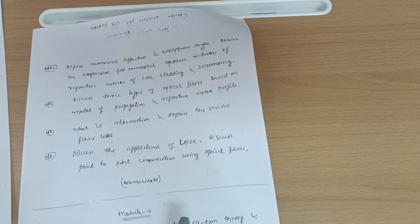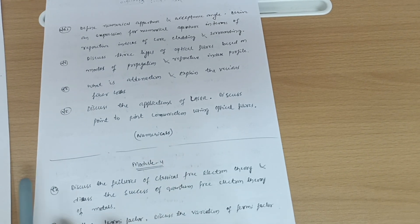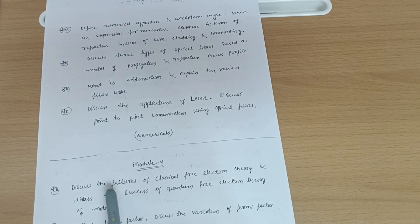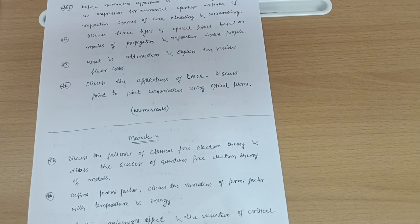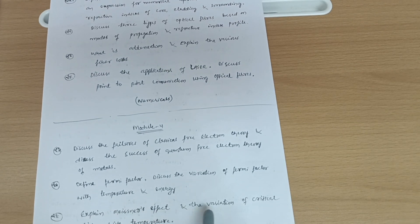Next is module four where you have to focus on some important concepts like discuss the failures of classical free electron theory and discuss the success of quantum free electron theory of metals. Next is define Fermi factor, discuss the variation of Fermi factor with temperature and energy. Next is explain Meissner's effect and the variation of critical field with temperature.